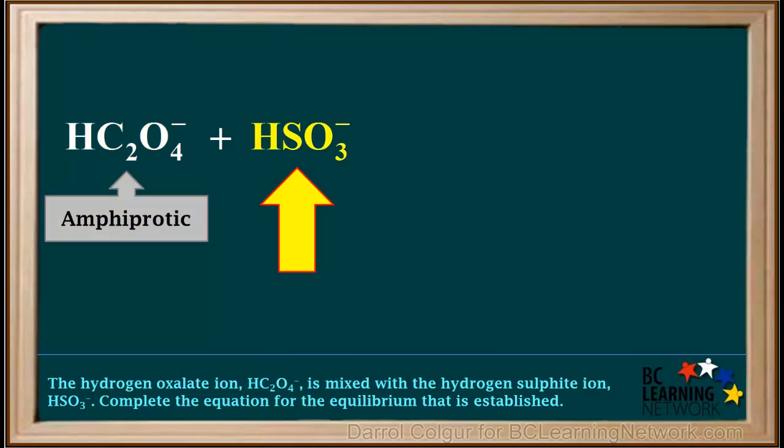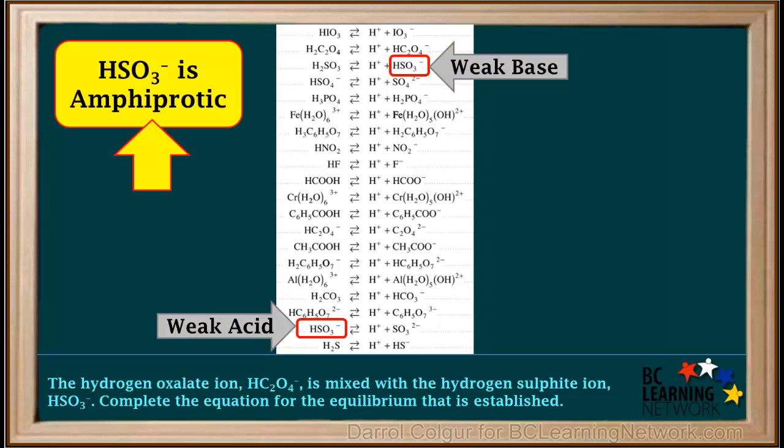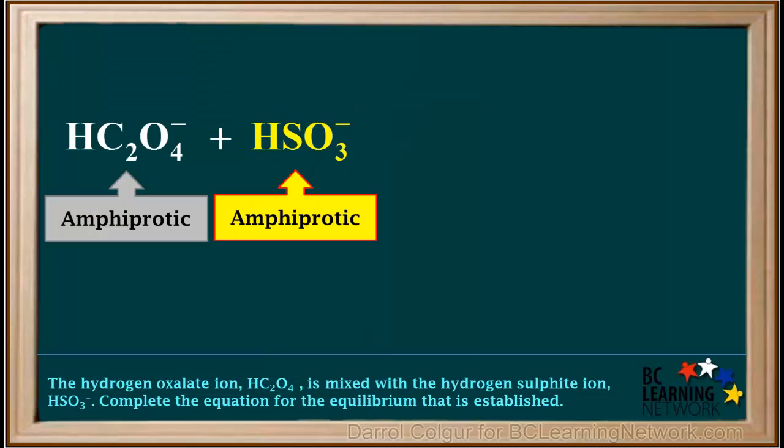Now we'll look up HSO₃⁻ on the table. We see that HSO₃⁻ is also on both sides of the table, so it is also amphiprotic. We'll label it as amphiprotic here.